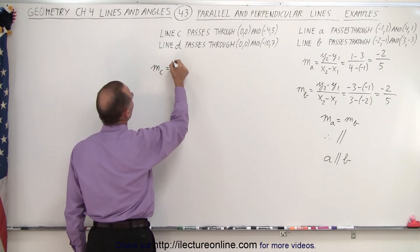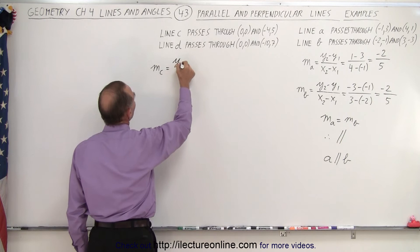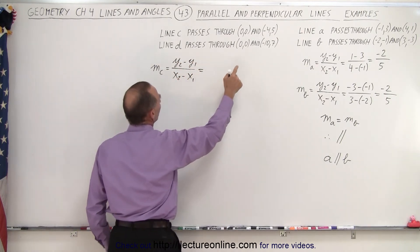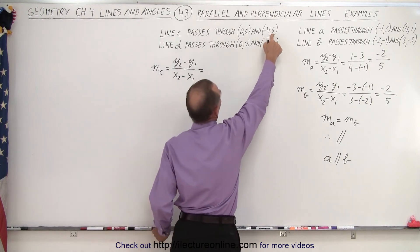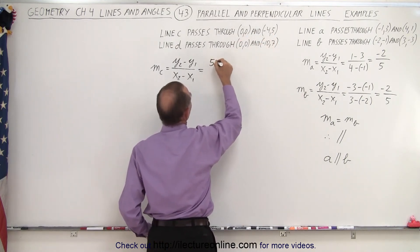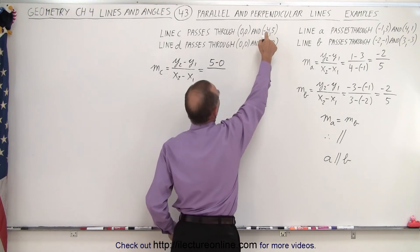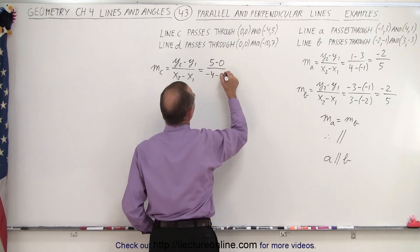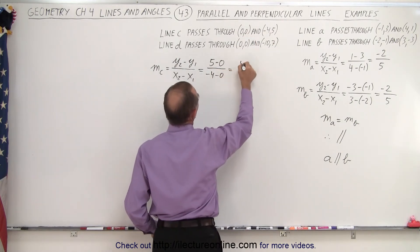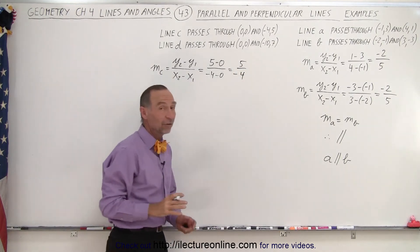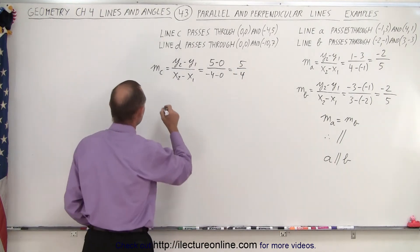Slope C is equal to Y2 minus Y1 divided by X2 minus X1. Let's call this Y2 and this Y1, so we end up with 5 minus 0 divided by negative 4 minus 0. So this becomes 5 divided by negative 4. Let's do the same for line D.